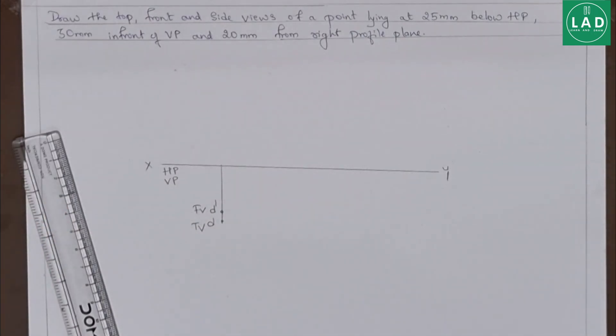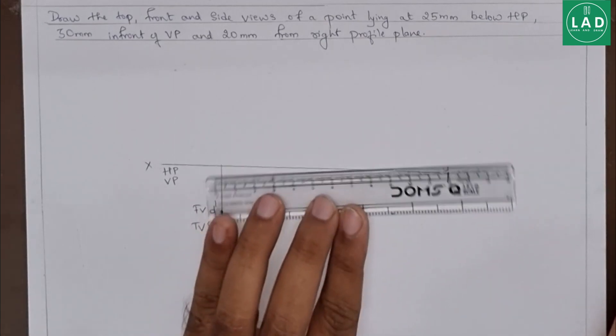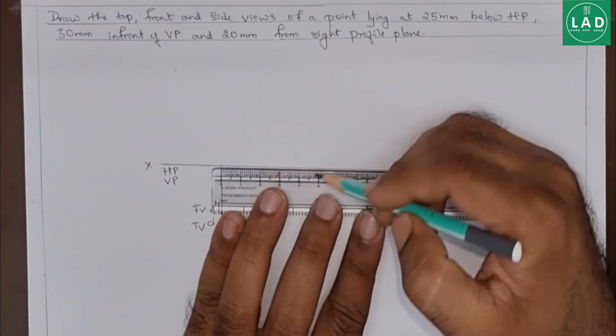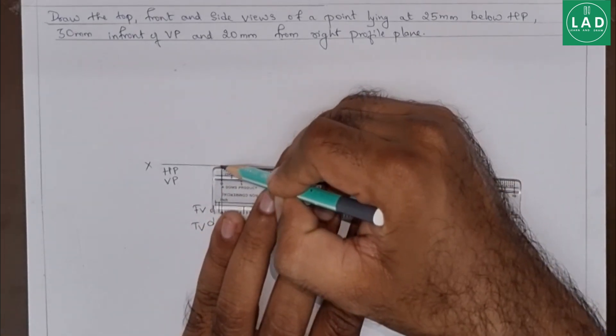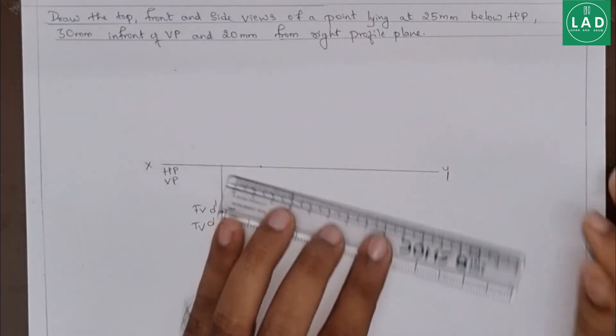Now, the last point is 20 mm from the right profile plane. Here what we have to do is draw the right profile plane. That is, we have to measure 20 mm here.